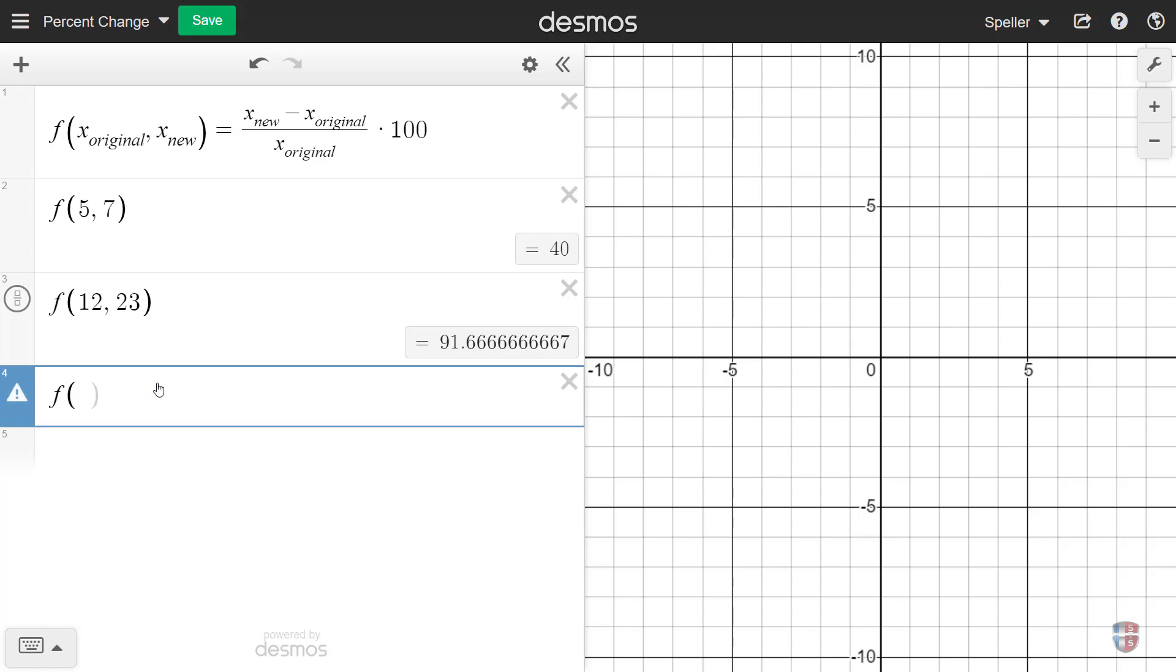And let's do another one here, and let's actually make this one showing the percent change as a negative. So let's say we started off with 89 and then we went down to 30. So here we see that the percent change is negative 66.29 percent.